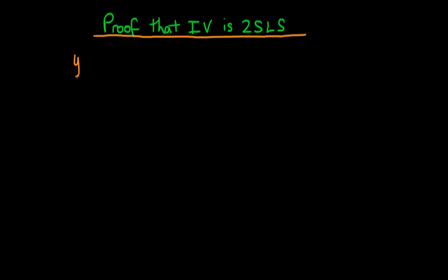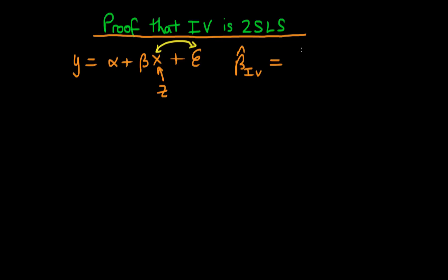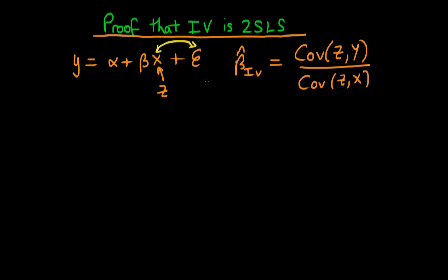As always we have a model which is y = α + βx + ε, where ε is the error and there is some covariance between the error and x, motivating the use of an instrument z which we use for x. The explicit form of the IV estimator — using population quantities, which is a bit neater — is that β̂_IV is equal to the covariance of z with y divided by the covariance of z with x.